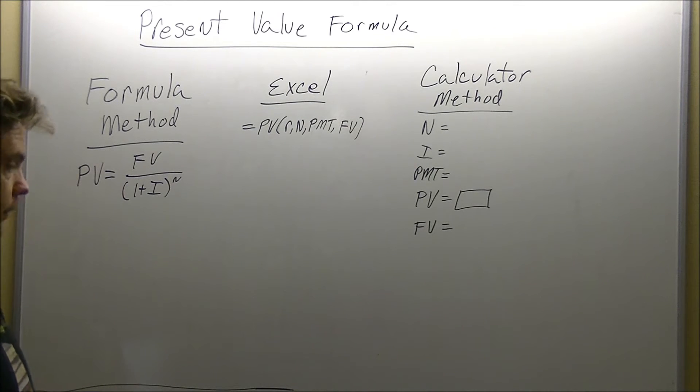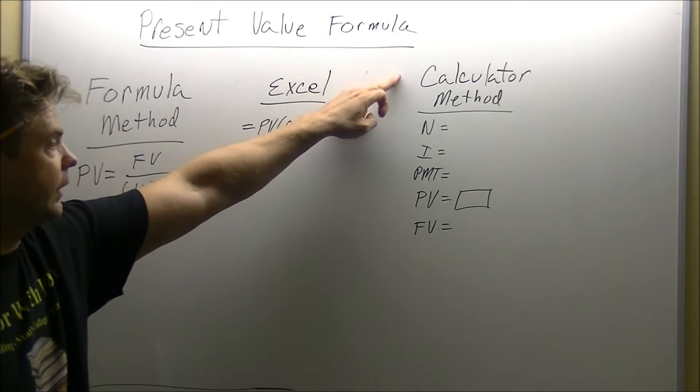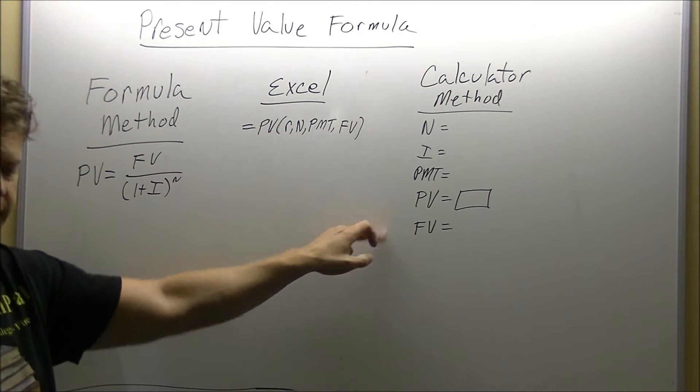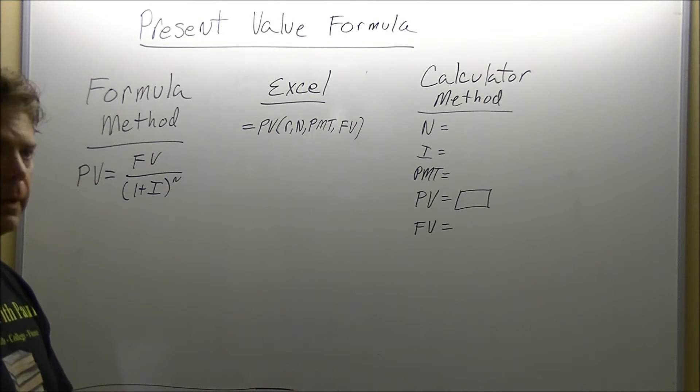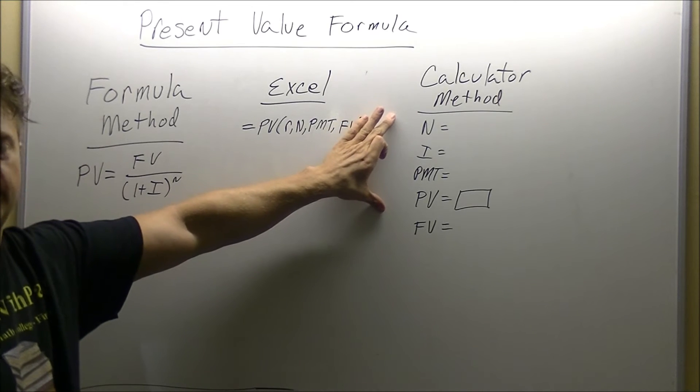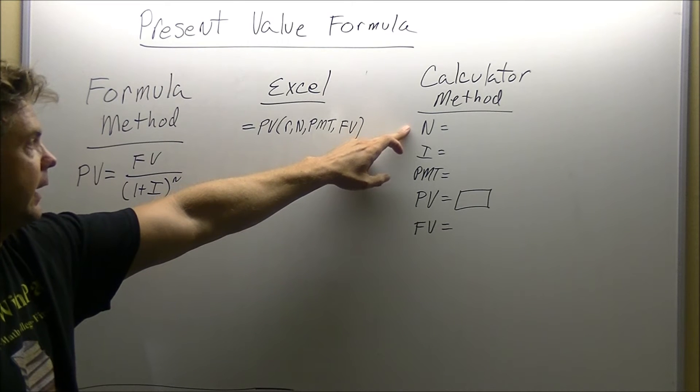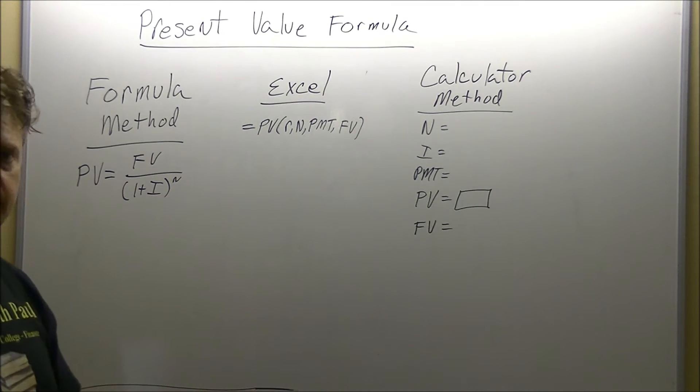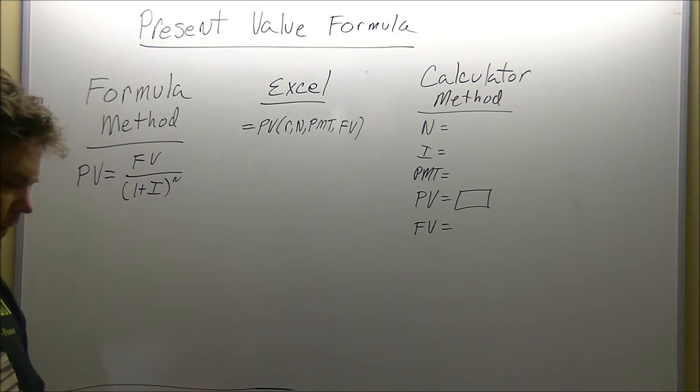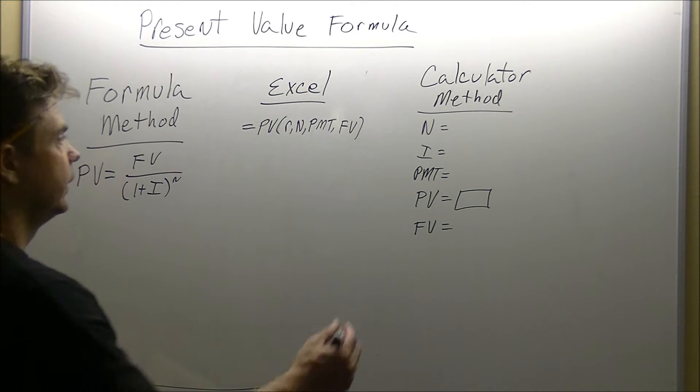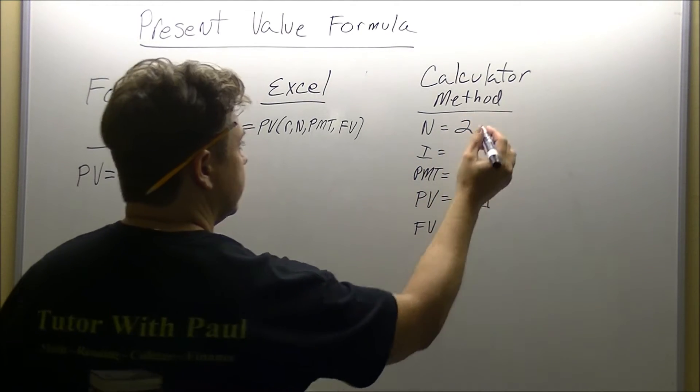The first thing we're going to do is fill in the calculator method. Even if you're not going to use it, this setup will allow us to take the information from the problem and put it into a structure that we can actually use. So the first section we're going to worry about is the N, and it is the number of years we're going to be dealing with. The problem said we are going to receive the payment in two years, so we'll put a 2 for the years.